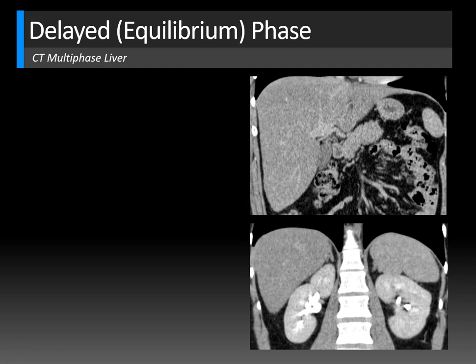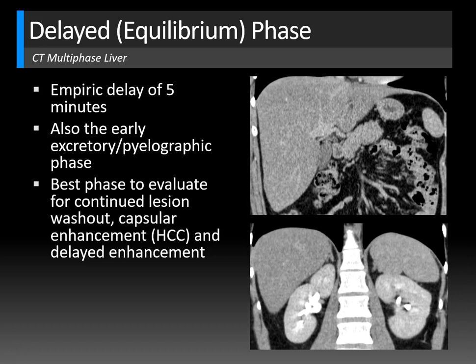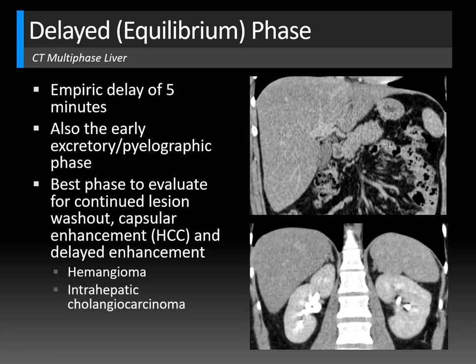The final phase of the multi-phase CT liver is the delayed or equilibrium phase, starting around four to five minutes and continuing until 10 minutes, during which contrast leaks out of the liver. This is also about the time you'll see early excretory and pyelographic phases of the kidneys, so look at the collecting system to detect subtle urothelial carcinoma. This phase is best for evaluating continued lesion washout and capsular enhancement — typical for hepatocellular carcinoma — and also for delayed enhancement of hemangioma and intrahepatic cholangiocarcinoma, which show gradual enhancement throughout the multi-phase study.